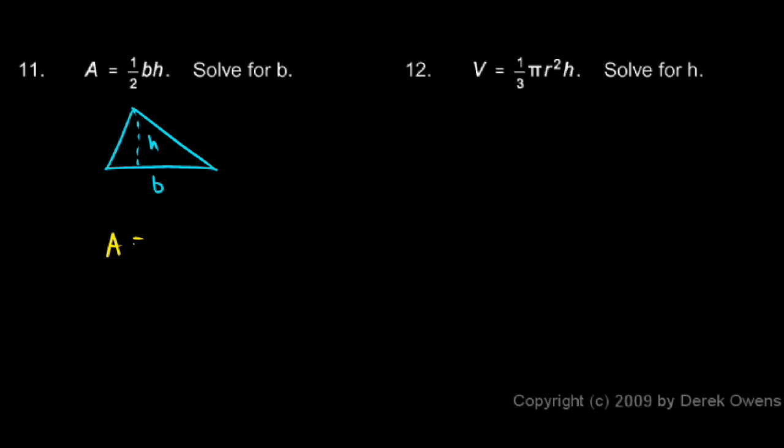So to solve this for b is pretty easy. 1 half bh is my formula. I'm going to multiply both sides by 2 over h. And when I do that, the 2's cancel out on the right, and the h's cancel out.